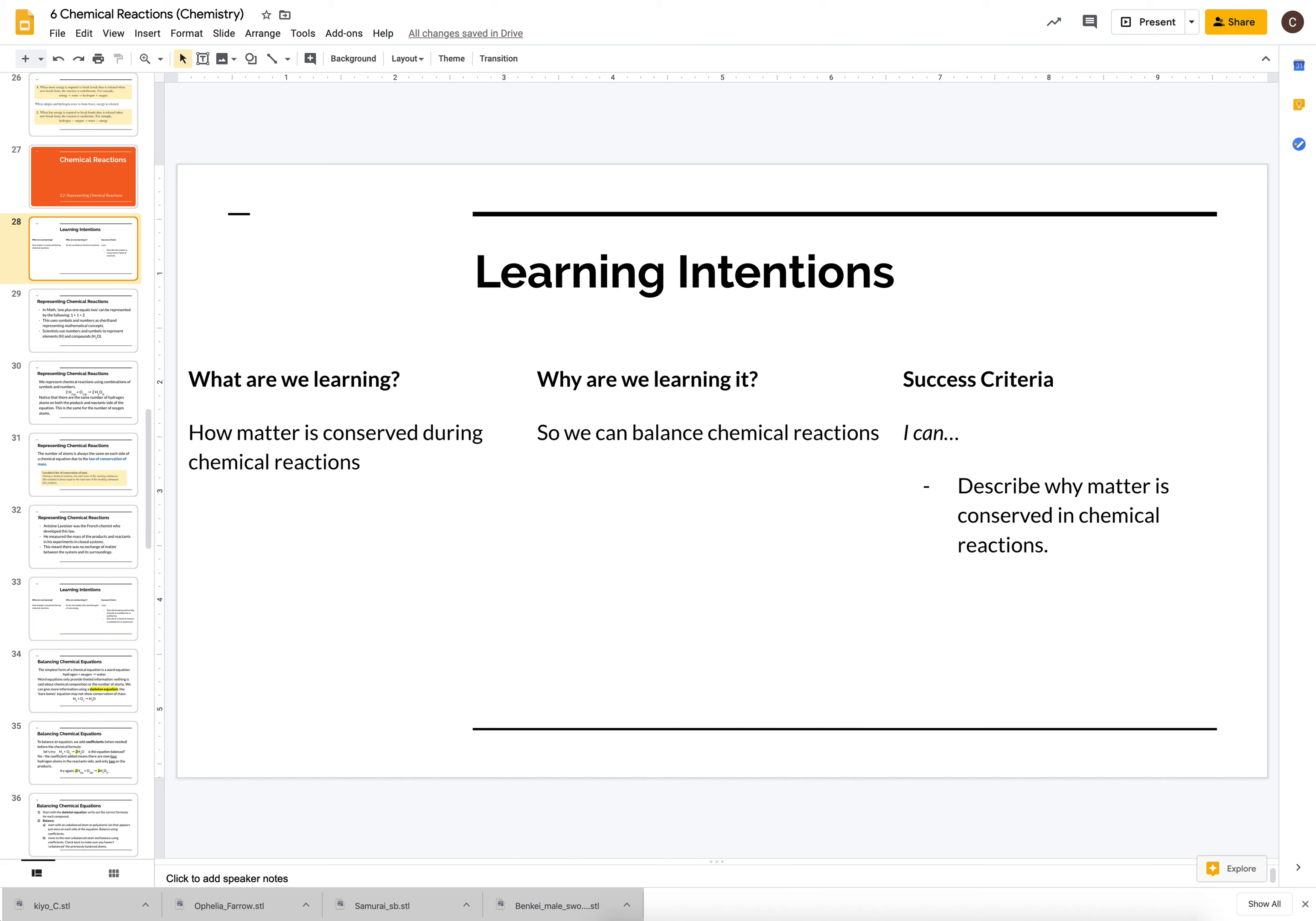Today we're learning how matter is conserved during chemical reactions. We want to learn this because we need to understand conservation of matter in order to balance chemical reactions, and our success criteria for today is being able to describe why matter is conserved.